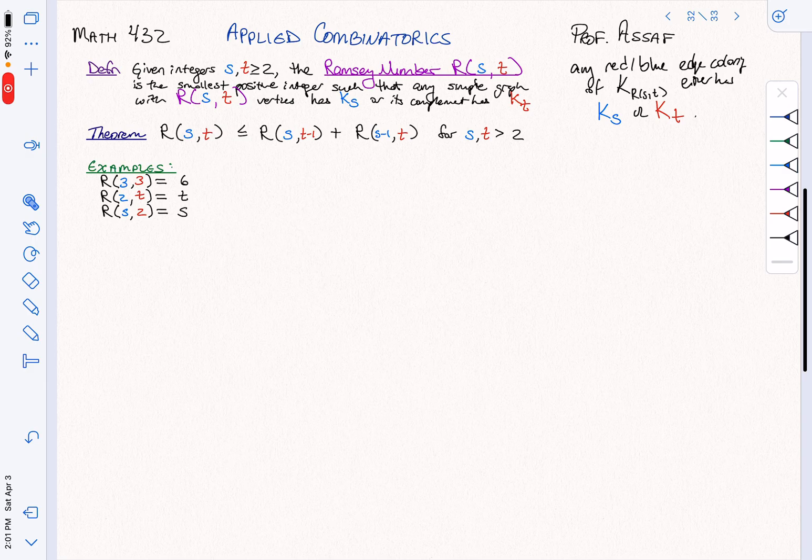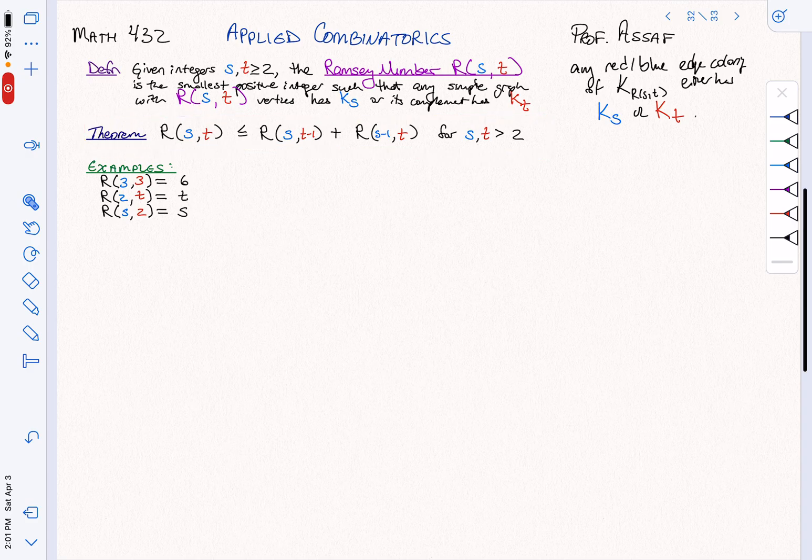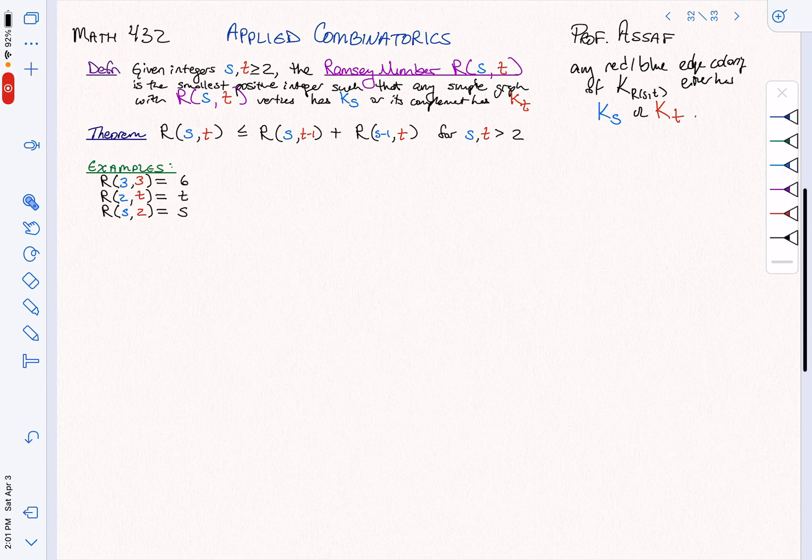We proved this really nice bound last time that the Ramsey numbers we can compute kind of recursively, except we're not actually computing them. This says less than or equal to. But nevertheless, we've done some examples. We did R(3,3) very explicitly, and then we had a nice argument for these guys.